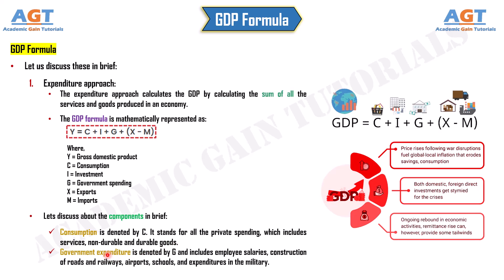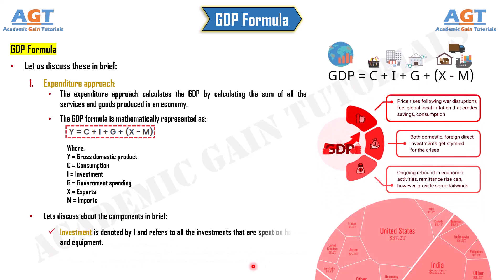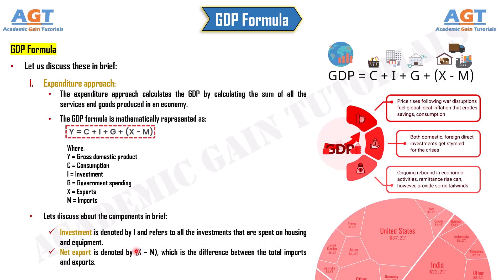Government expenditure is denoted by G and includes employee salaries, construction of roads and railways, airports, schools, and expenditures in the military. Investment is denoted by I and refers to all the investments that are spent on housing and equipment. Net export is denoted by X minus M, which is the difference between the total imports and exports.